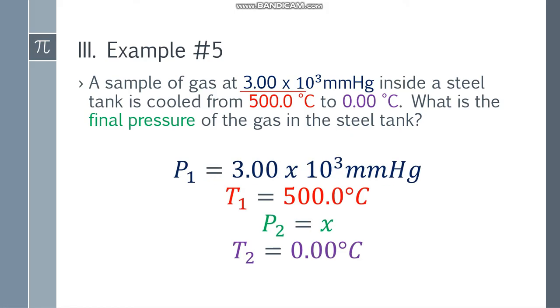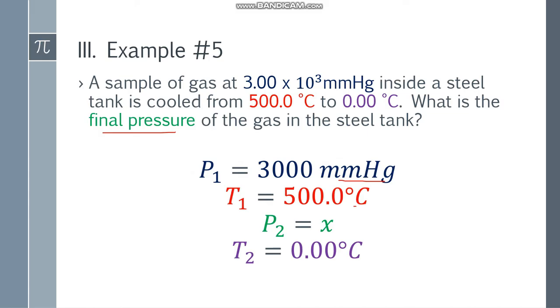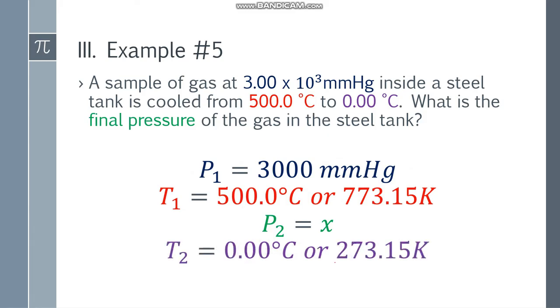So 3.00 times 10 cube - simplify it. 10 cube is 1,000, so 3 times 1,000 is 3,000 mmHg. No need to adjust units since it's mmHg and nothing else was specified. For Celsius, change to Kelvin. 500 plus 273.15 is 773.15, and 0 becomes 273.15. We're ready.